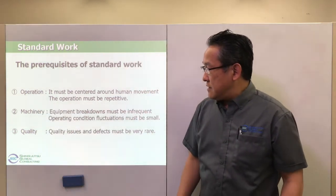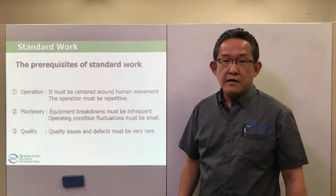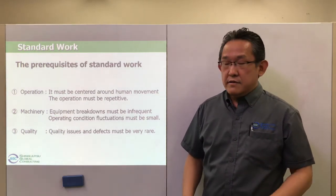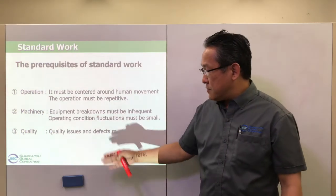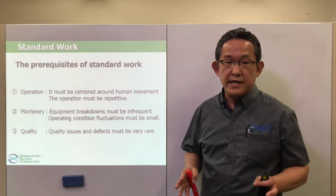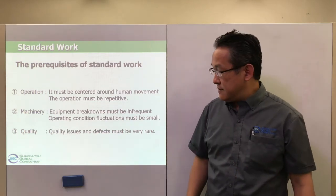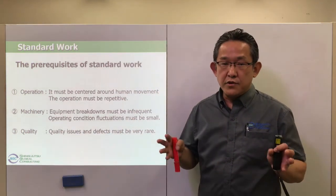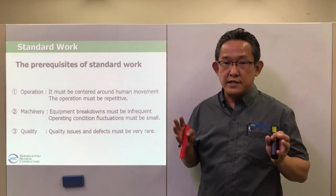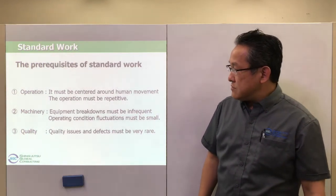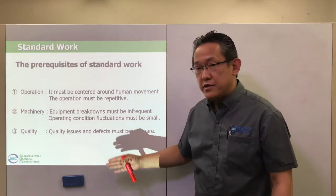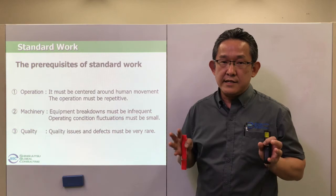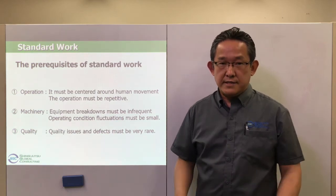In addition, from a facility perspective, it is important to stop equipment failures and reduce such breakdowns. If there are many equipment failures, standard work will be interrupted and it leads to operation hindrance. The same can be said for quality — if there are many abnormalities like defects, standard work will be interrupted. Therefore, it is necessary to improve and eliminate anomalies such as failures and defects before setting standard work.